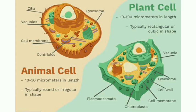A large central vacuole is present in plant cells, while the vacuoles in animal cells are very small. Chloroplasts are present in plant cells but absent in animal cells. Centrioles are present in the lower forms of plants, while they are present in animal cells. Lysosomes are absent in plant cells but present in animal cells.